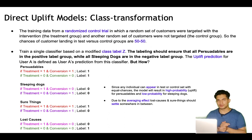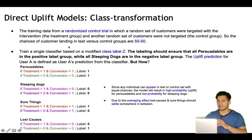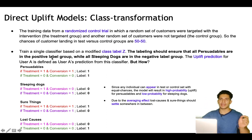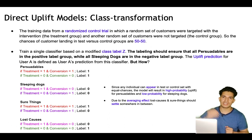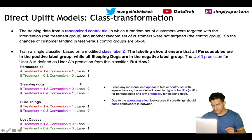Now we'll look at direct uplift models. The target variable transformation can be a little tricky but I'll make it very simple. The first is class transformation. The training data comes from a randomized control trial where a random set of customers are in the treatment group and another in the control group, with 50/50 chances. We train a single classifier on a modified class label Z. The labeling ensures that all persuadables are in the positive label group while all sleeping dogs are in the negative label group.